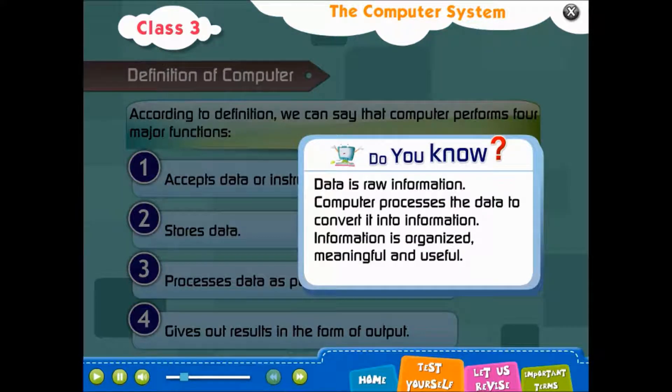Do you know? Data is raw information. Computer processes the data to convert it into information. Information is organized, meaningful and useful.